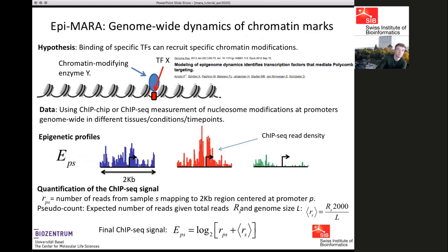This concludes my summary of using MARA on transcriptome data. I now want to say a little about using MARA with ChIP-seq data to learn about transcription factors responsible for driving chromatin modifications. We first developed this in a collaboration with the lab of Dirk Schübeler in Basel, interested in testing the idea that binding of transcription factors to particular loci can recruit chromatin-modifying enzymes and cause chromatin modifications at those loci.